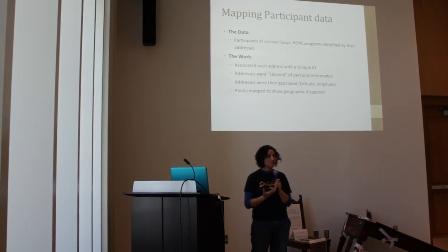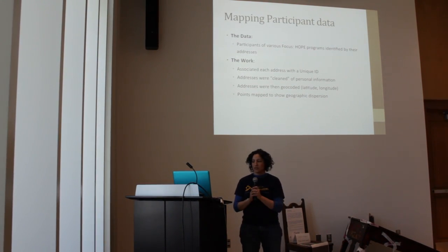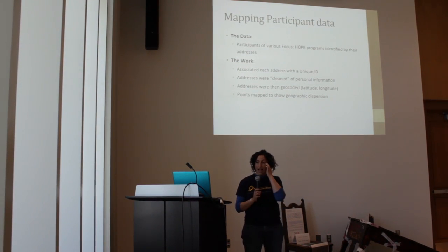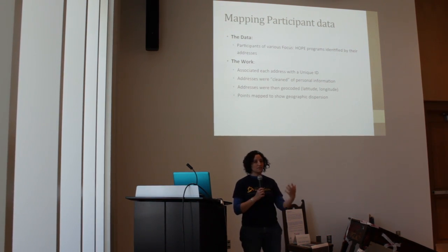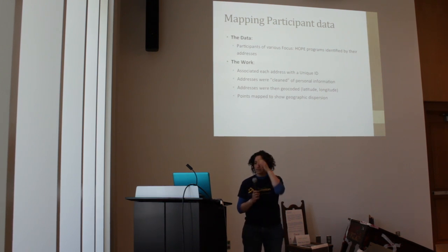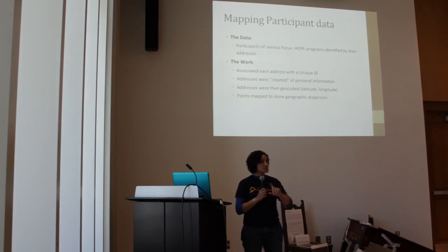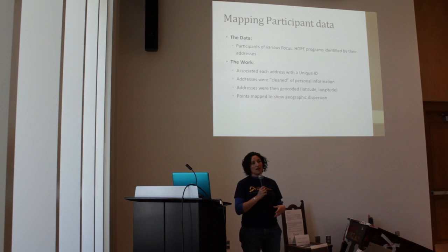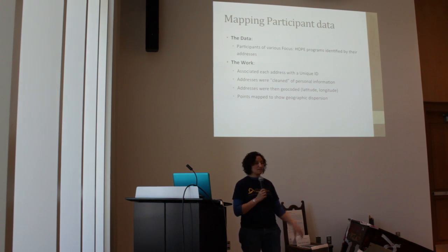We started off with their participant data. We associated an address — we were given all of the addresses for all of the various programs. The idea was to attach an ID and see if we could match people across various programs. The addresses were then cleaned of personal information, meaning that instead of giving an exact address, we would change it so that it would only have the first two significant digits, giving a rounding-off effect on addresses.